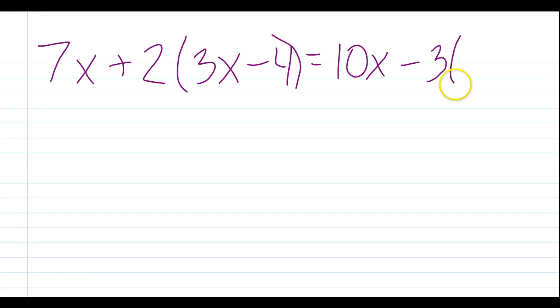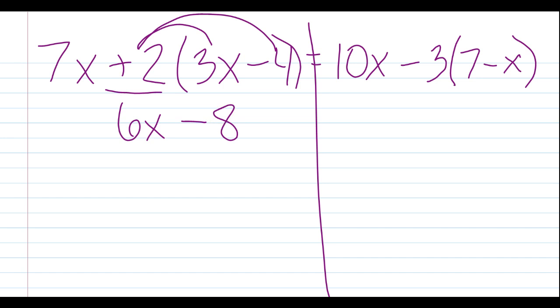So, let's look at one more. Say that we have 7x plus 2 times 3x minus 4 equals 10x minus 3 times 7 minus x. I'm trying to think of these as I go, so it's a little confusing there. Let's split our sides. On the left side, let's do distribution first. We need to distribute this positive 2. So, positive 2 times 3x is going to be 6x. Positive 2 times this negative 4 is going to be negative 8, or just minus 8. I'm going to bring down my 7x there.